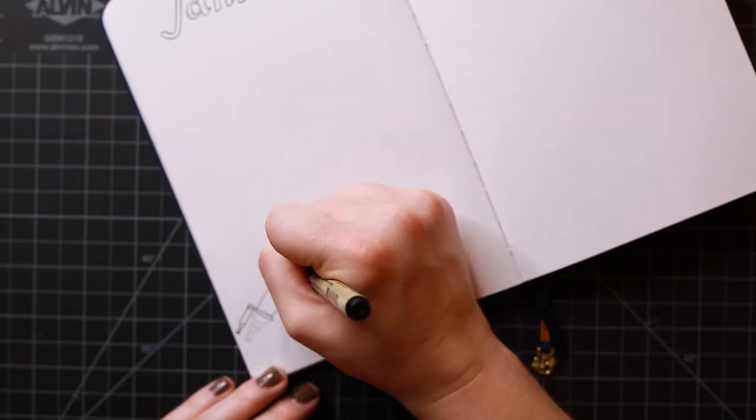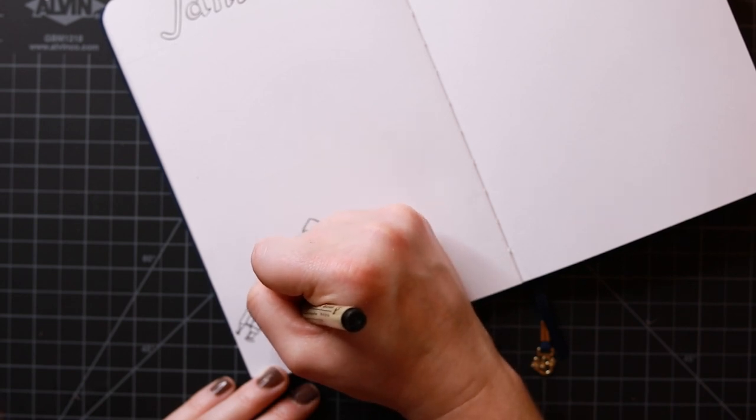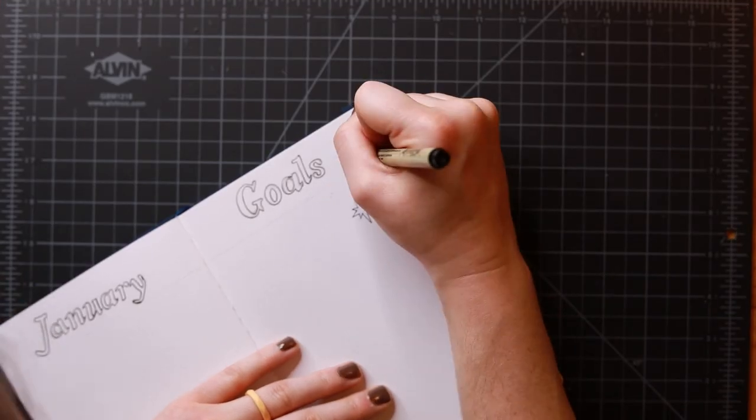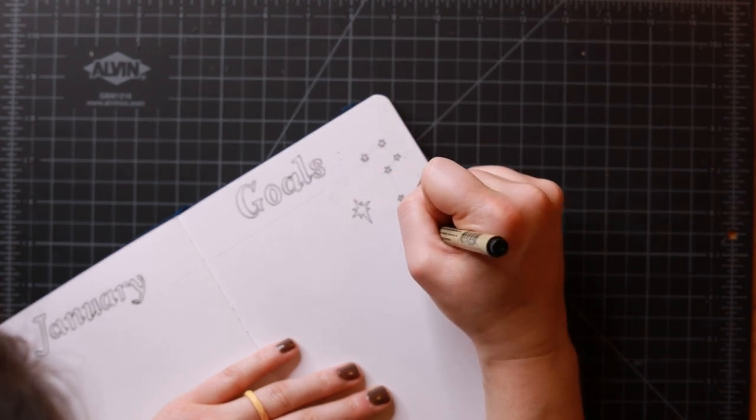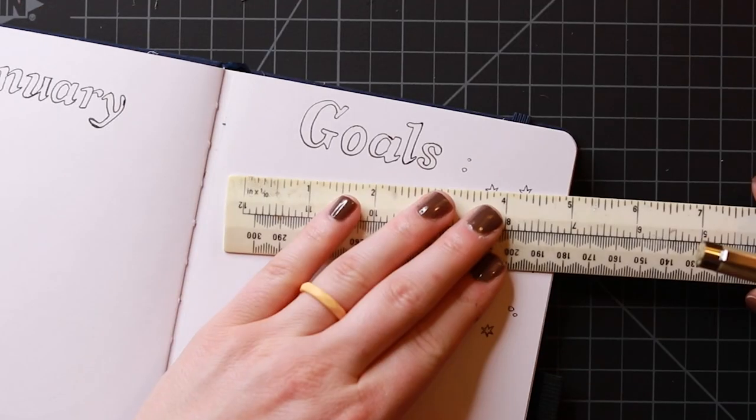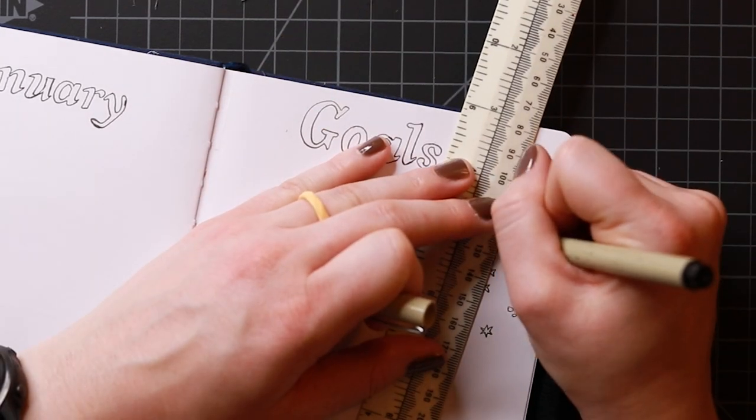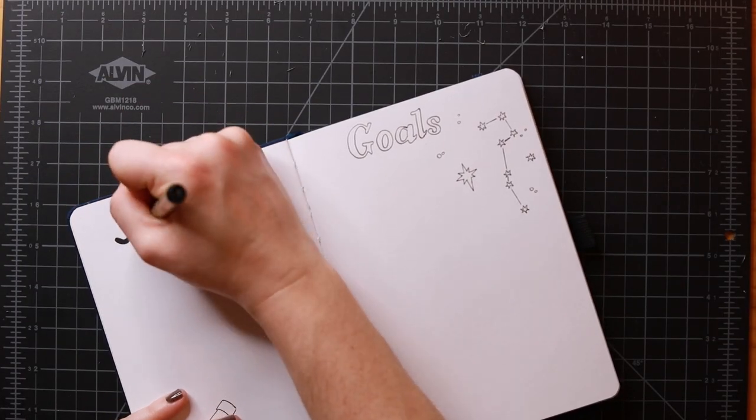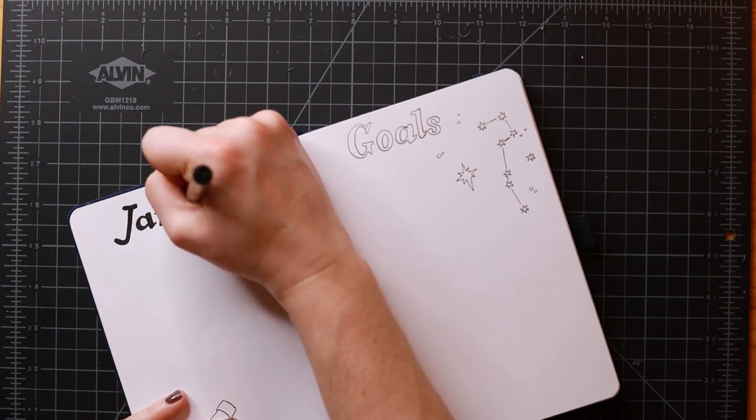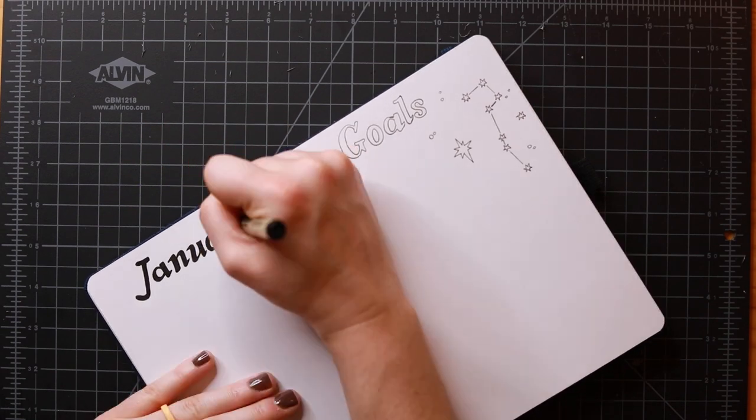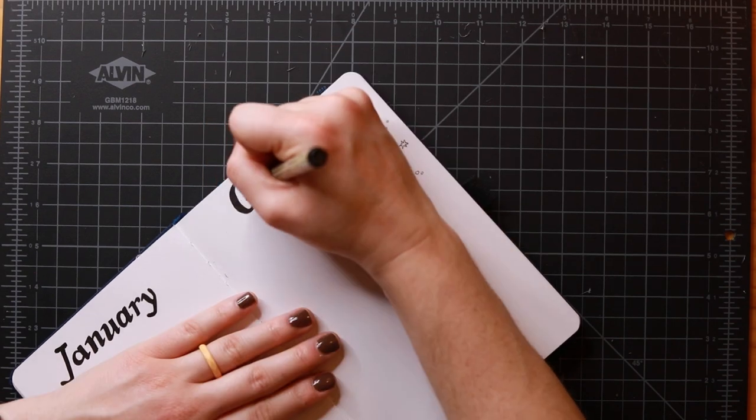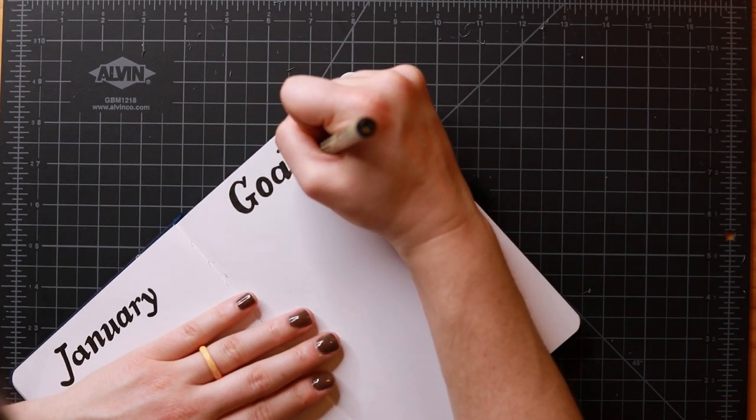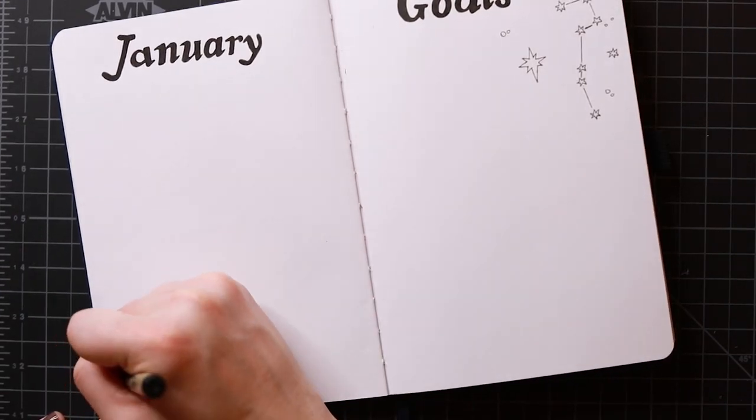And now I'm setting up my January goals spread. I like to have a double spread for this because I have lots of goals and I like to be able to sketch out different goals and some trackers and do some planning. So for this one, I'm keeping it fairly simple in terms of the design, just a telescope looking up at Polaris and the big dipper and filling in the text, leaving lots of space for filling this out later for my own personal goals.